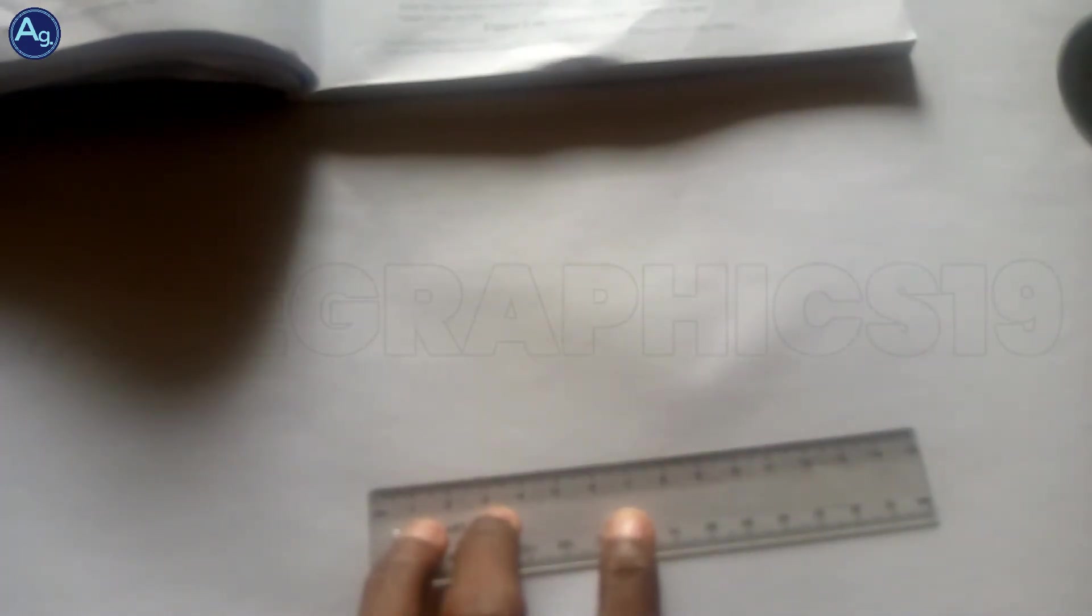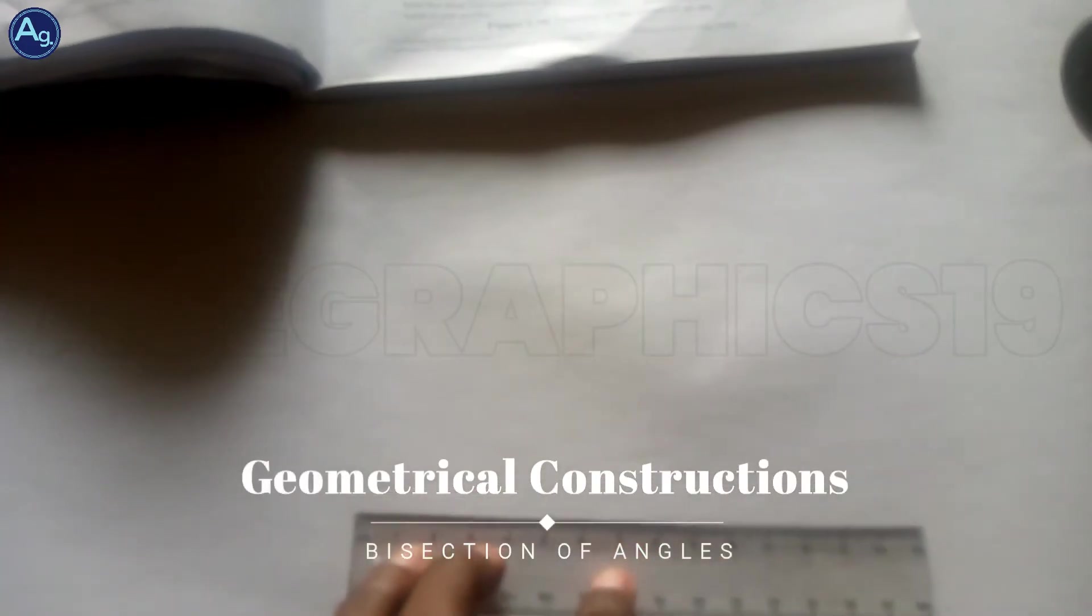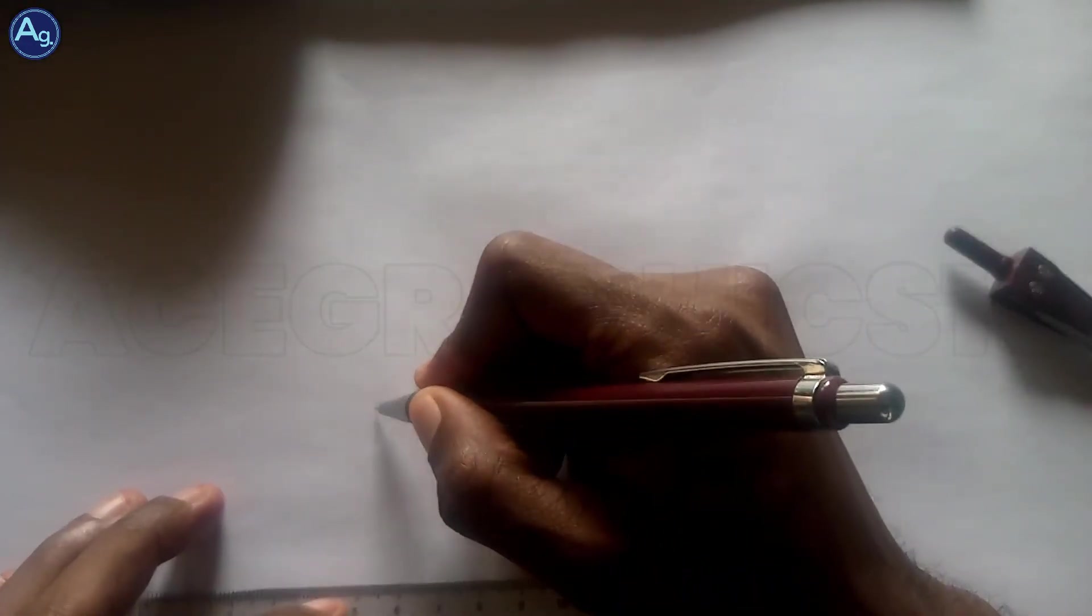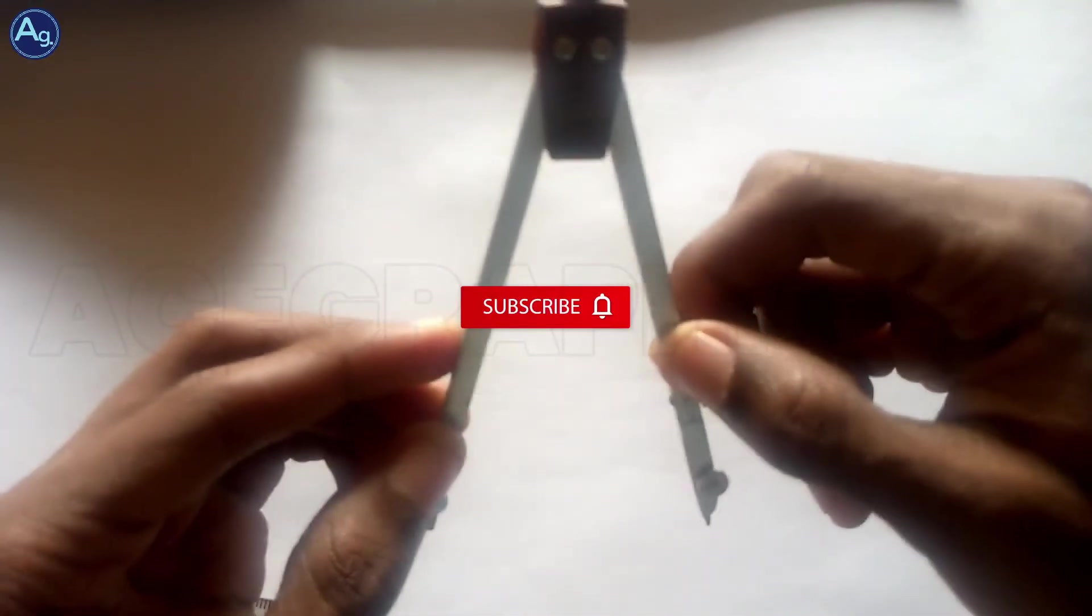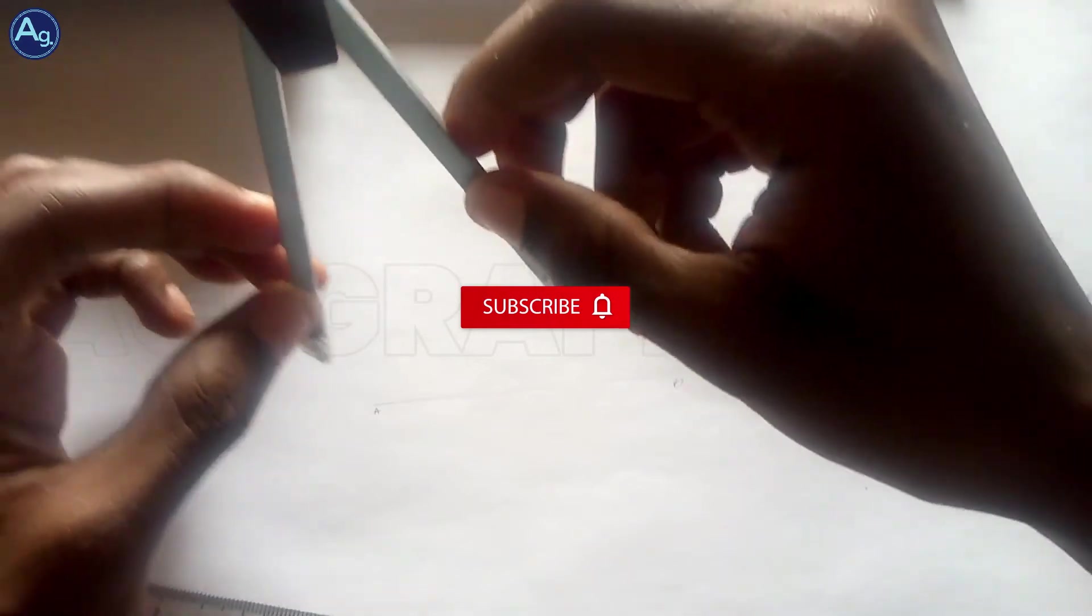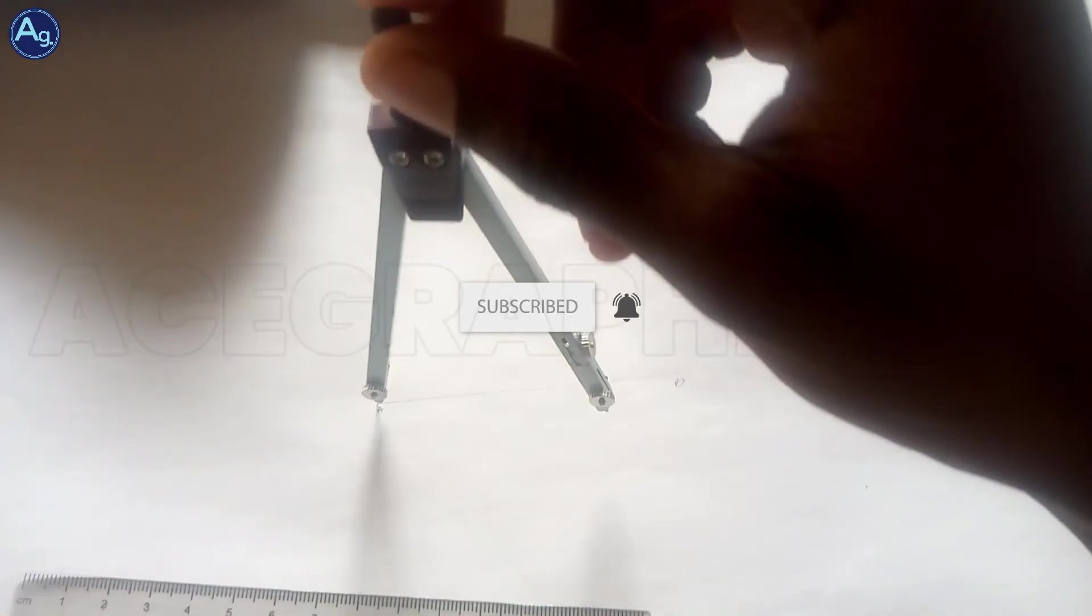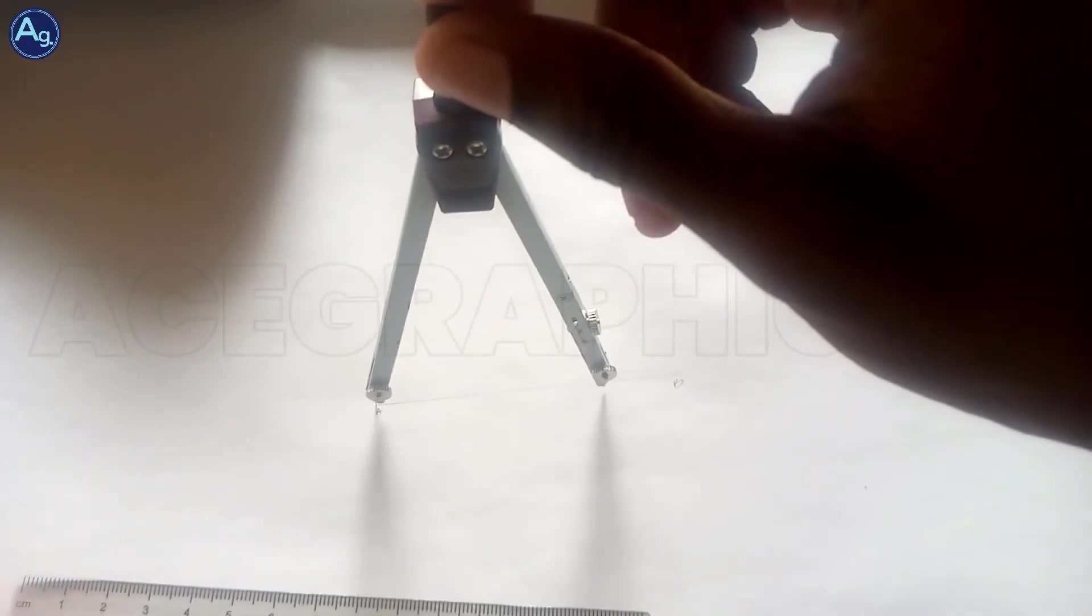First of all, learn how to construct 60 degrees. To construct 60 degrees, just pick any radius, point it at point A, and just draw an arc.